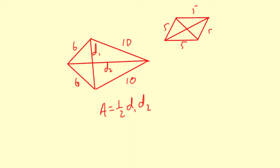Same formula here. Area is one-half diagonal one times diagonal two. So you multiply the diagonals, divide by two, and that's your area.